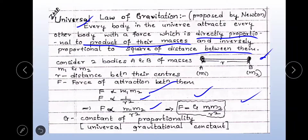This implies F equals G times M1 times M2 divided by R squared, where capital G is called the universal gravitational constant — it is the constant of proportionality. Note: small g is acceleration due to gravity; capital G is the universal gravitational constant.